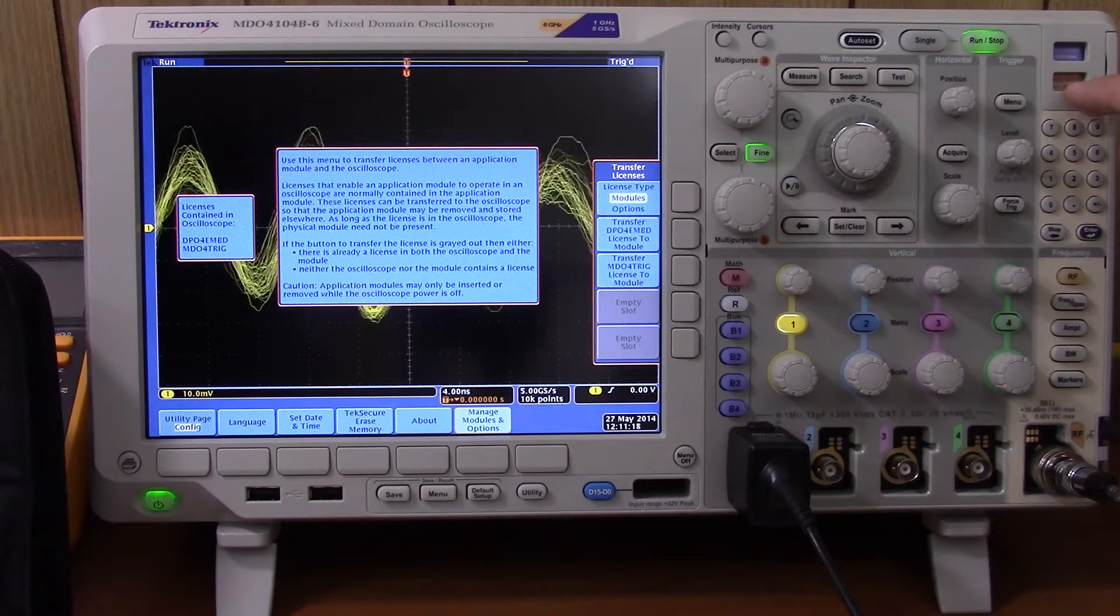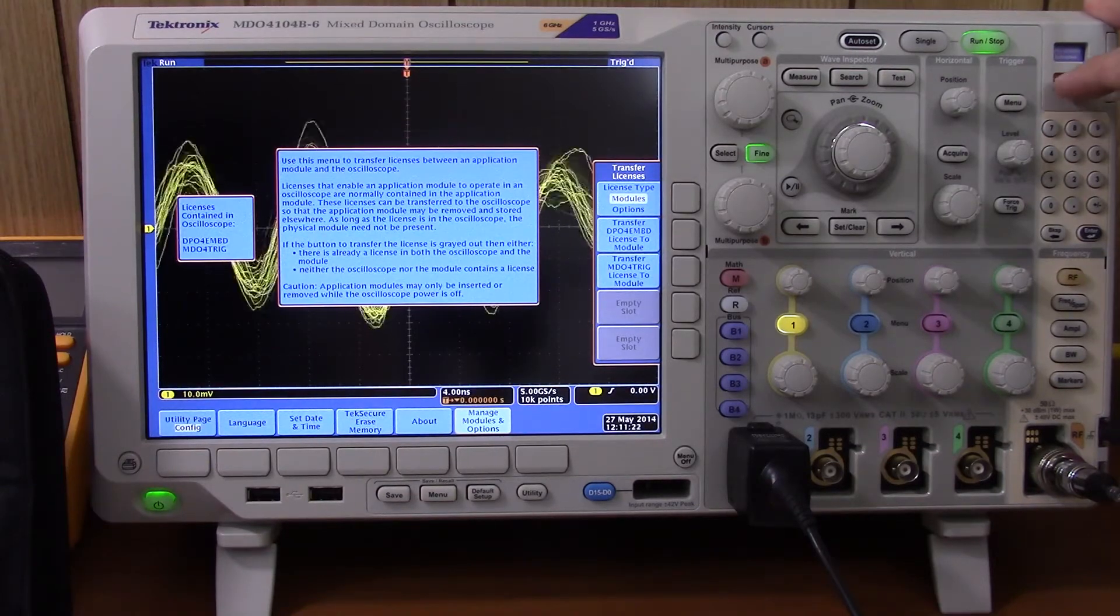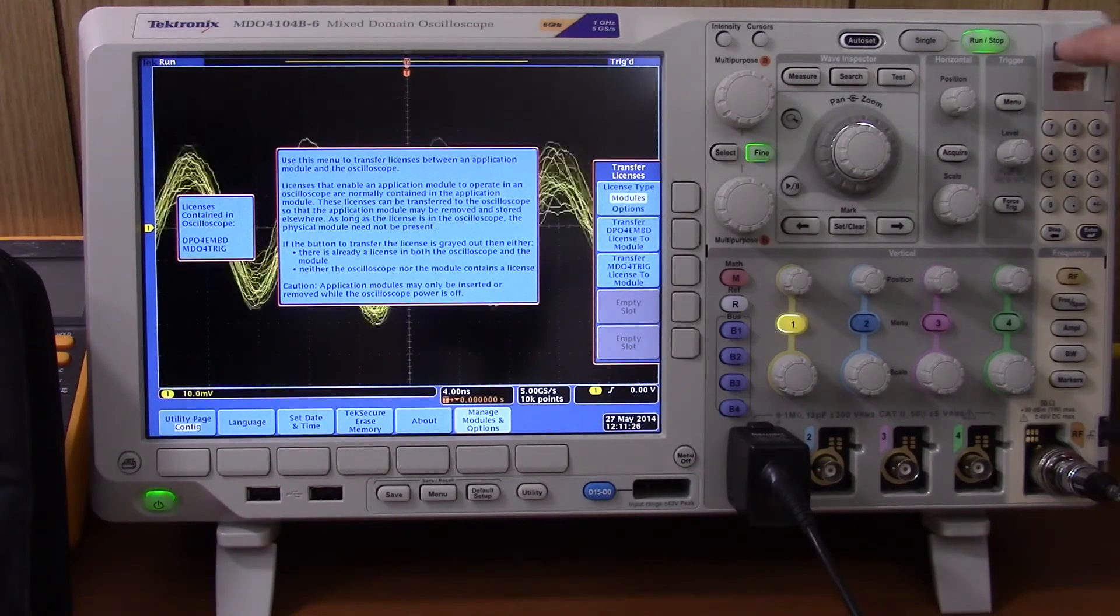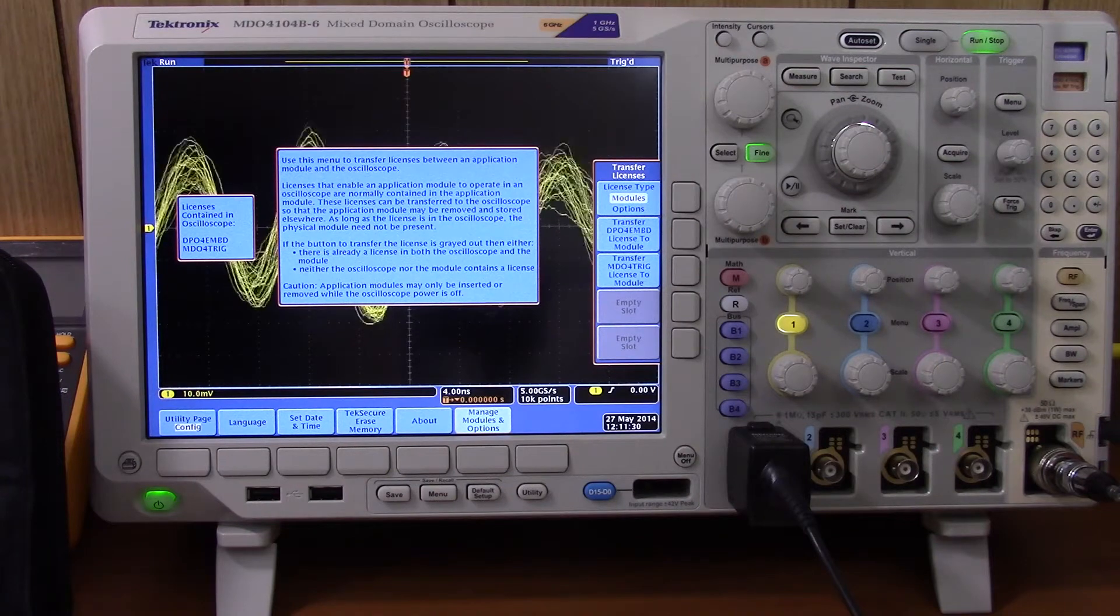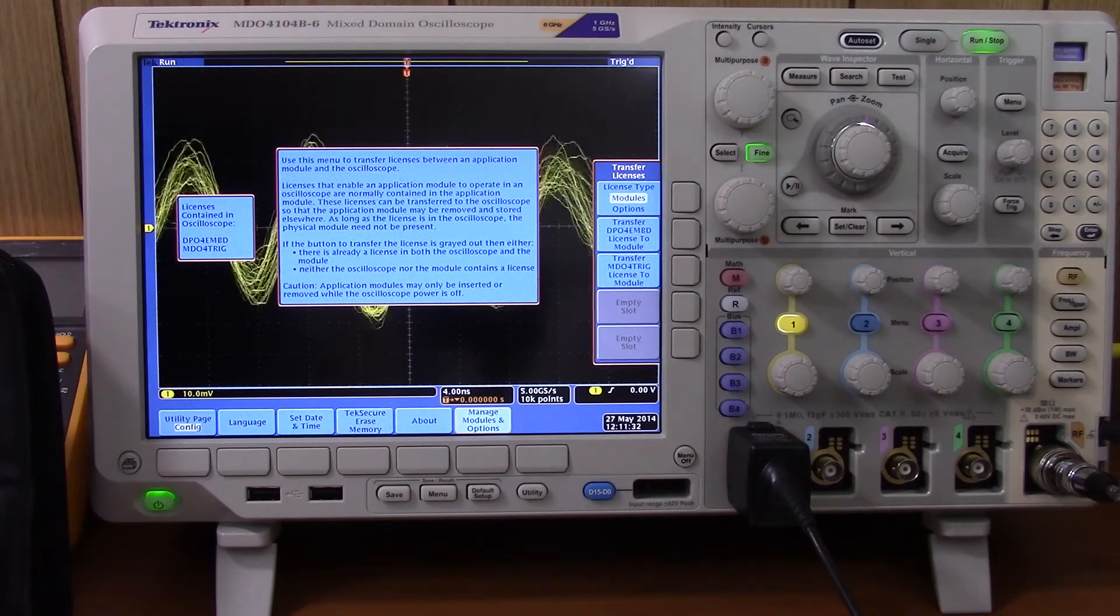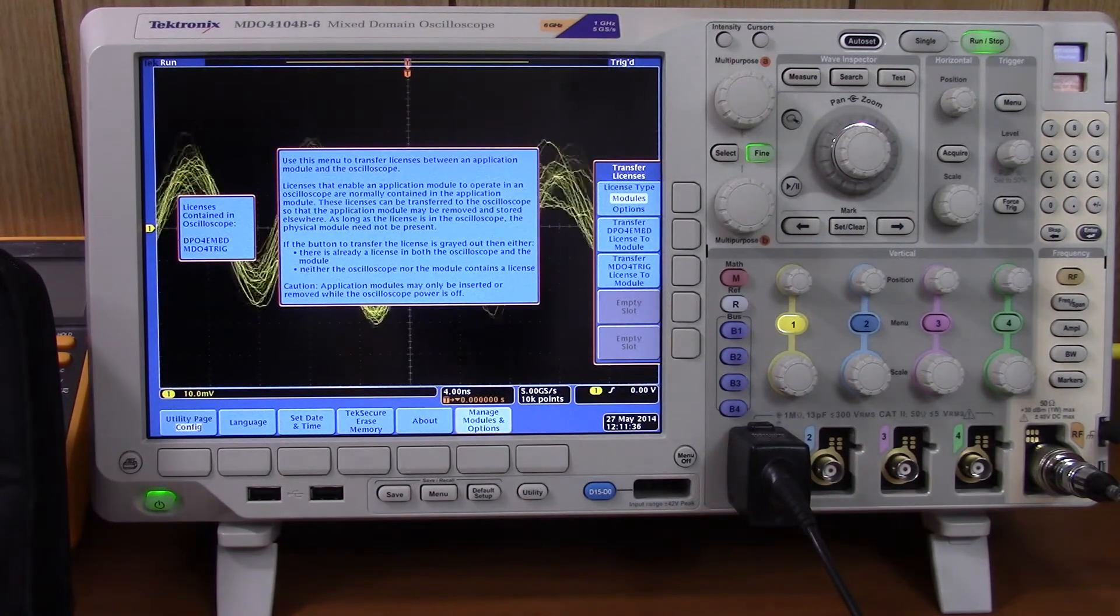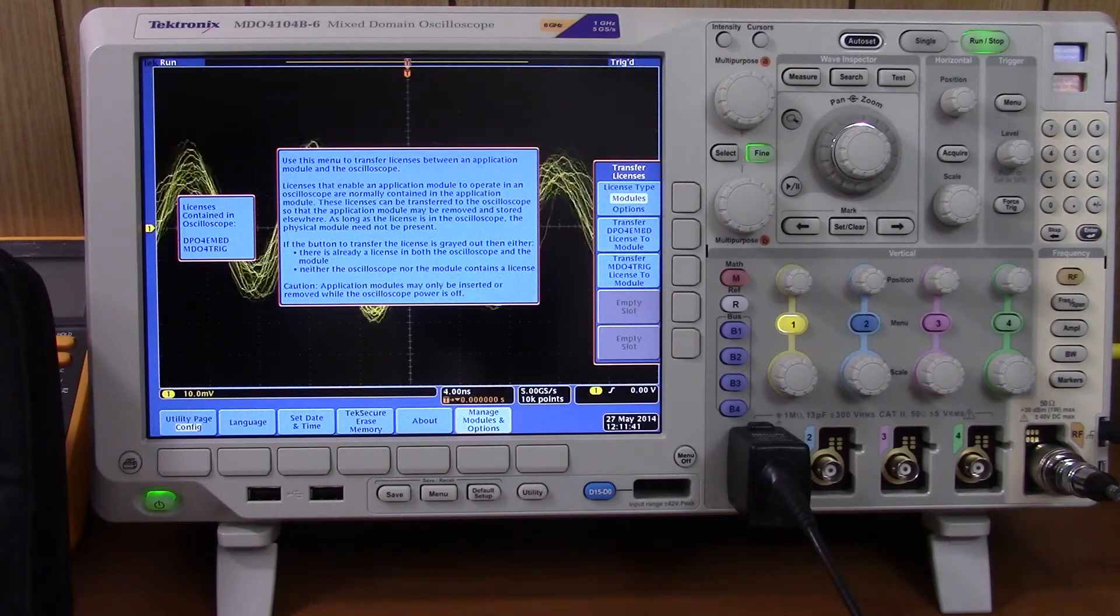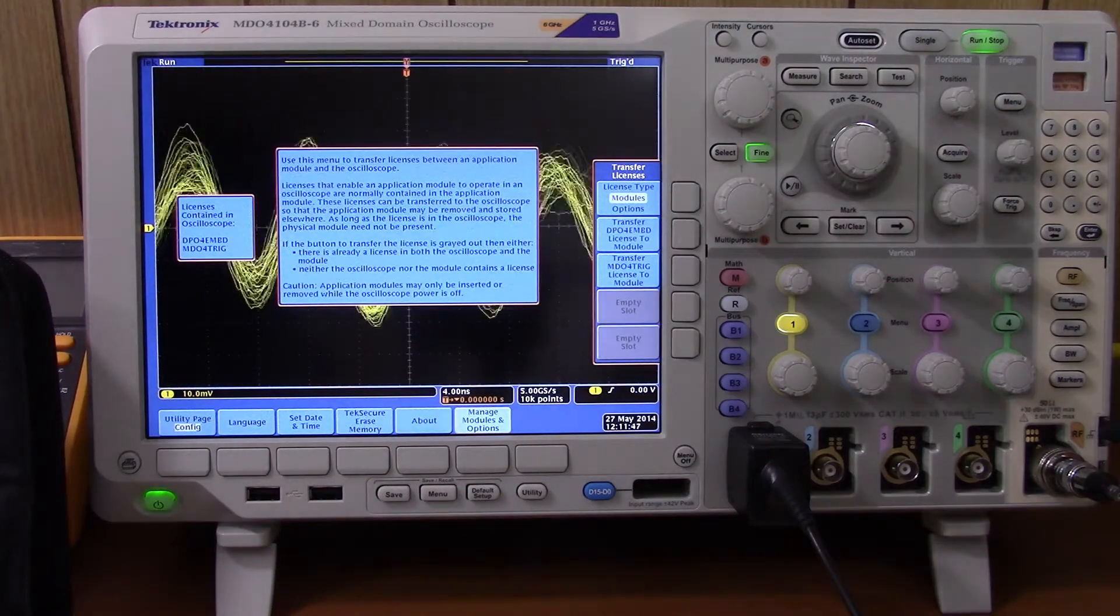The license now actually lies on the oscilloscope. Now you can take these two modules out, of course, after shutting down the oscilloscope, put them in a drawer, put them in a safe place somewhere where they don't get lost. But they are essentially worthless as for activating any options on an oscilloscope. They basically, if you think about it, you can think of them as a carrier media, kind of like a USB stick to carry the licensing file.